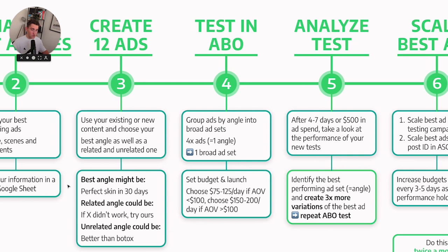Now let's say 'perfect skin in 30 days' is the successful transformation angle. You need to find a related angle — probably the opposite. I know a brand that sells lash serums where what worked really well on TikTok was saying, 'Hey, you tried Vaseline' or 'Hey, you tried olive oil on your lashes — and it's just stupid.' There's a big group of people who are already solution-aware and problem-aware, just looking for something that finally works for them. An angle like this is perfect. So if you tried that, it didn't work, you couldn't make the transformation — then try ours.